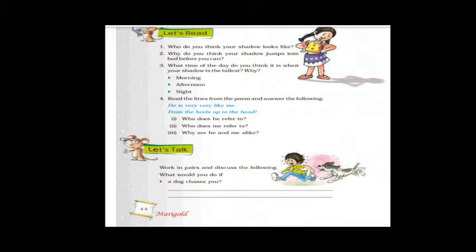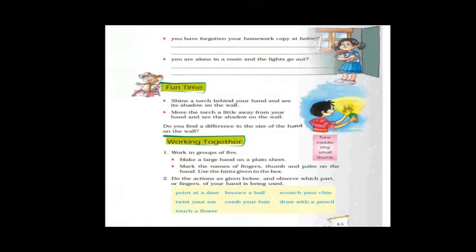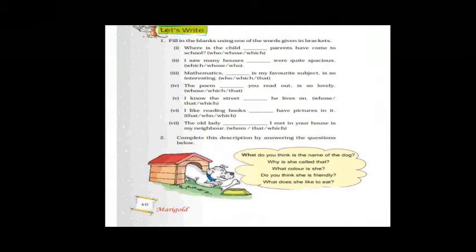Work in pairs — discuss the following situations. If a dog chases you, you could run or walk slowly depending on the situation. If you have forgotten your homework at home, apologize to your class teacher and say sorry. If you are alone in a room and the lights go off, you can light a candle. Fun time activity: shine a torch behind your hand and see its shadow on the wall. Move the torch a little away and observe how the shadow changes. Try this at home.